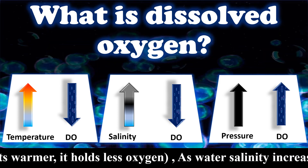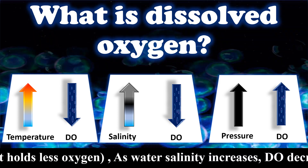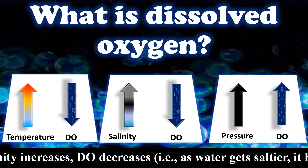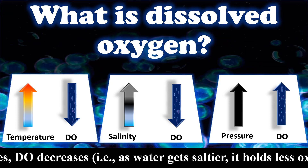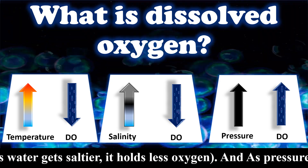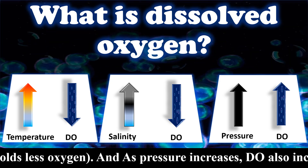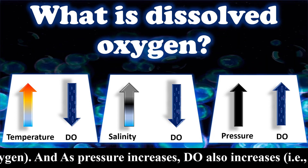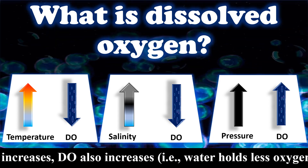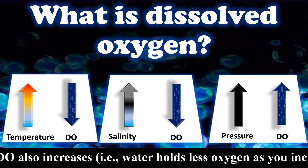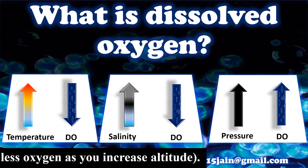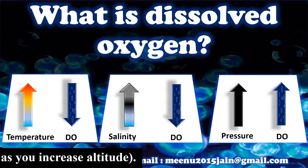As water salinity increases, dissolved oxygen decreases — that is, as water gets saltier, it holds less oxygen. And as pressure increases, dissolved oxygen also increases. That is, water holds less oxygen as you increase altitude.